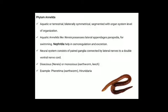Phylum Annelida: they are aquatic or terrestrial, bilaterally symmetrical, segmented, with organ system level of organization. Aquatic annelids like Nereis possess lateral appendages called parapodia for swimming. Nephridia help in osmoregulation and excretion. Neural system consists of paired ganglia connected by lateral nerves to a double ventral nerve cord. They are dioecious in the case of Nereis, or monoecious (hermaphrodites) in the case of earthworm and leech. Example: Pheretima posthuma (earthworm).